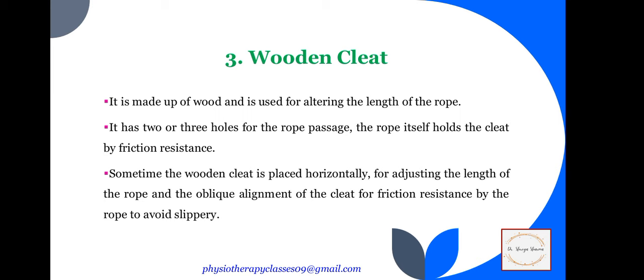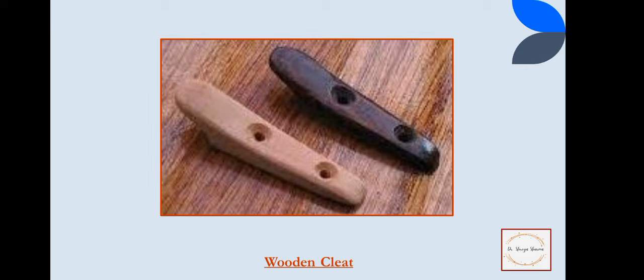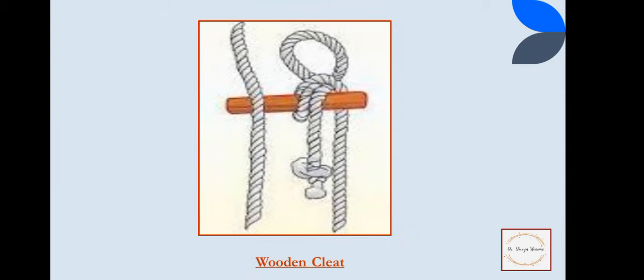The next instrument is the wooden cleat. As the name suggests, it is made up of wood and is used for altering the length of the rope, since every patient's body is different. It has two or three holes through which you can increase or decrease the rope length. Sometimes the wooden cleat is placed horizontally for adjusting the length of the rope, and in an oblique alignment for friction resistance by the rope to avoid slipping.